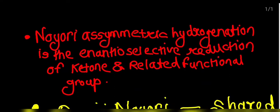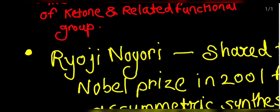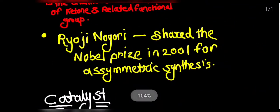Hello to all. In this video, we are going to discuss one of the name reactions, that is Noyori Asymmetric Hydrogenation. The Noyori Asymmetric Hydrogenation is an enantioselective reduction of the ketone and related functional groups. It simply means the conversion of the ketone to the alcohol. This name reaction was introduced by Ryoji Noyori, who shared a Nobel Prize in 2001 for asymmetric synthesis.